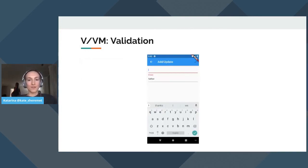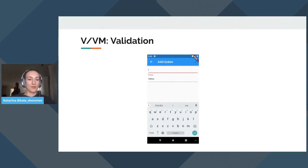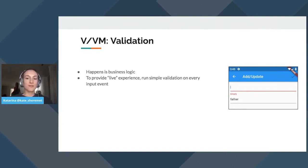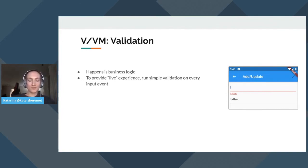Now let's talk about validation. When we create a word with translation, we need to validate that fields are not empty and, depending on that, disable or enable the save button. Validation happens in business logic. To provide a live experience, we can run simple validation on every user input event — text field, checkbox, slider, etc. We also have to show a validation error. We can create a separate stream for every field to show errors, or use existing streams and send validation error events to them.